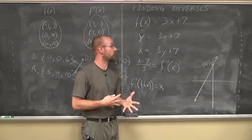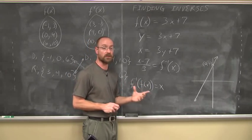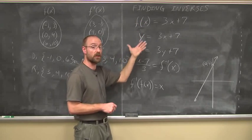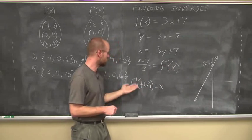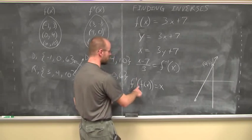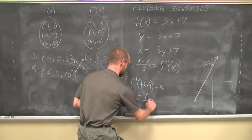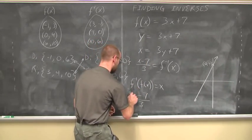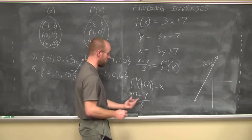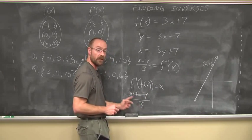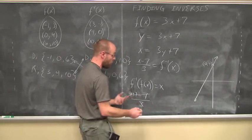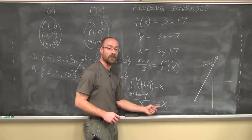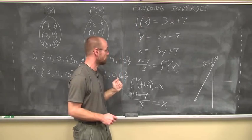We can use composite functions to check our work. If the inverse is correct, then f inverse of f of x should equal x. Taking f inverse of x equals x minus 7 over 3 and substituting f of x equals 3x plus 7 in place of x: 3x plus 7 minus 7 gives 3x, and 3x over 3 equals x. The 7 minus 7 cancels and 3 over 3 reduces to 1, leaving just x. Every inverse function verified this way will always equal x.